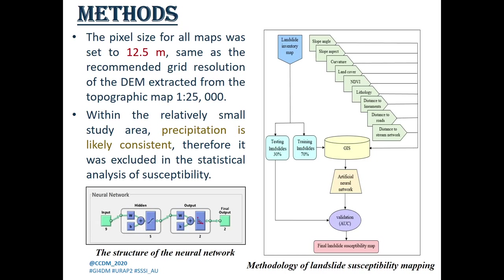A multi-layer perceptron neural network using backpropagation, with the structure of nine input layers, five hidden layers, and two output layers, was selected for the neural network training phase, with a random subdivision of the input landslide and non-landslide training data set into 70% for training, 15% for validation, and 15% for testing. The resulting susceptibility map was validated using area under the curve analysis.